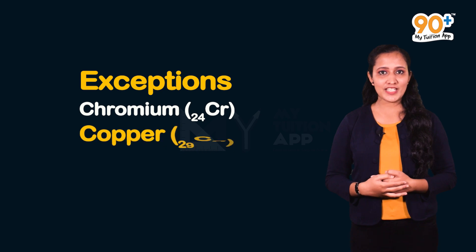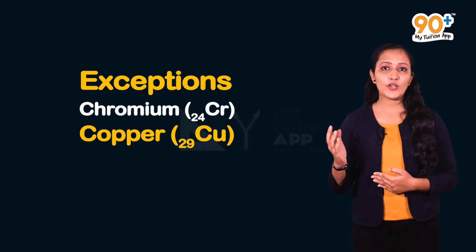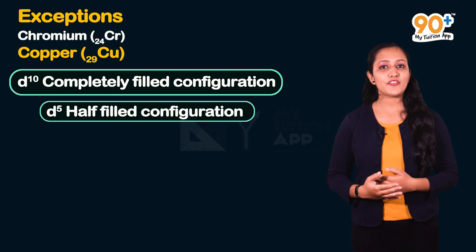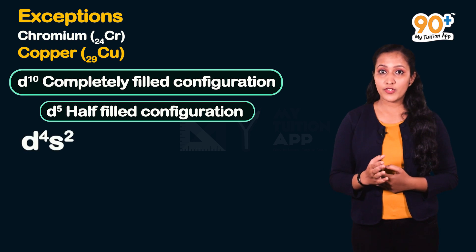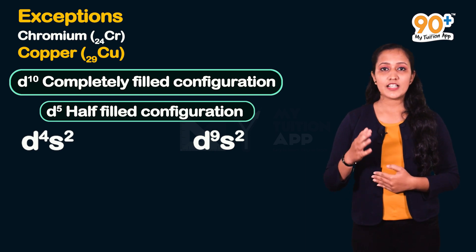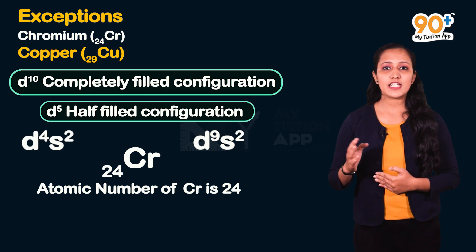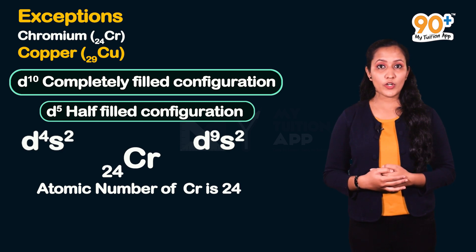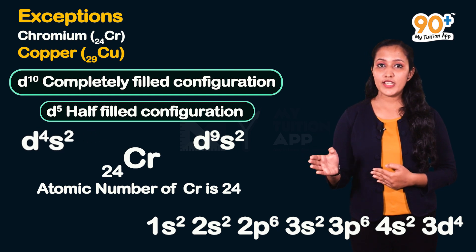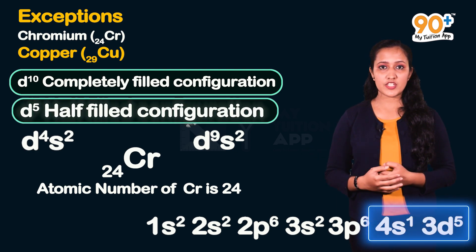Moving on to the third important topic: Exceptions — chromium (24) and copper (29). D subshells with completely filled (d¹⁰) or half-filled (d⁵) configurations are more stable. Chromium has 24 electrons. The expected configuration would be d⁴s², but one electron from 4s shifts to 3d, giving 4s¹, 3d⁵ — a half-filled, more stable configuration.